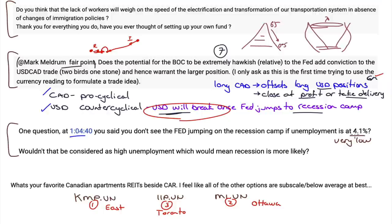At 4.1% unemployment, the Fed won't jump to the recession camp — that's still very low. They will not jump until unemployment is like 6–7%. They're not going to leave the job undone. 4.1% is historically very low unemployment. Recession becomes more likely as unemployment increases, but you'd have to get well above 4.1%.